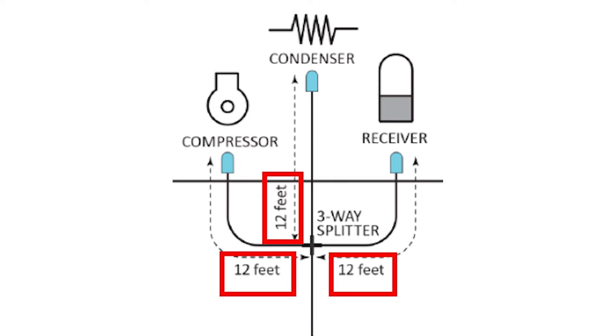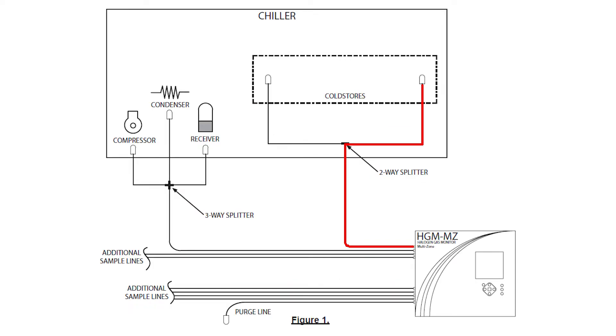All legs of a split must be the same length to ensure an equal sample draw from each of the separate locations. The total distance for a line utilizing a splitter should equal the total length from the monitor to the splitter, plus the length of any one leg of tubing after the splitter. Do not add up all of the leg lengths to calculate this distance.